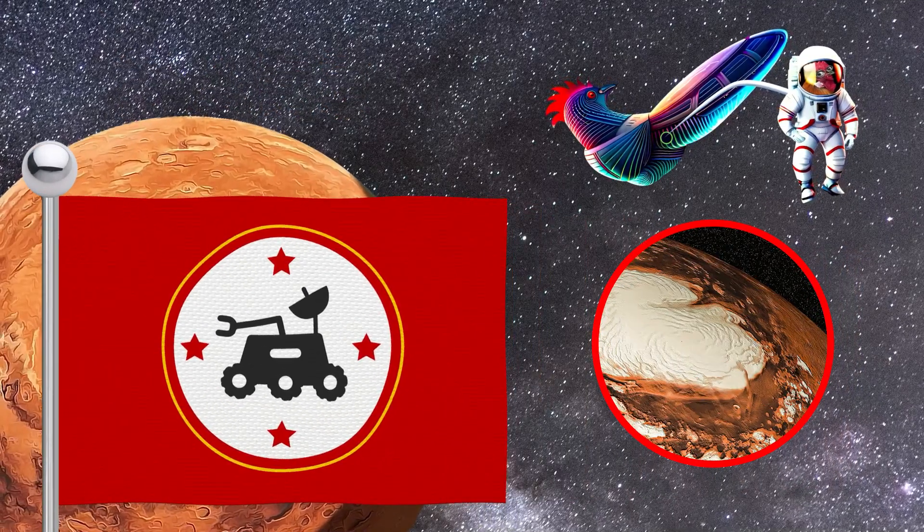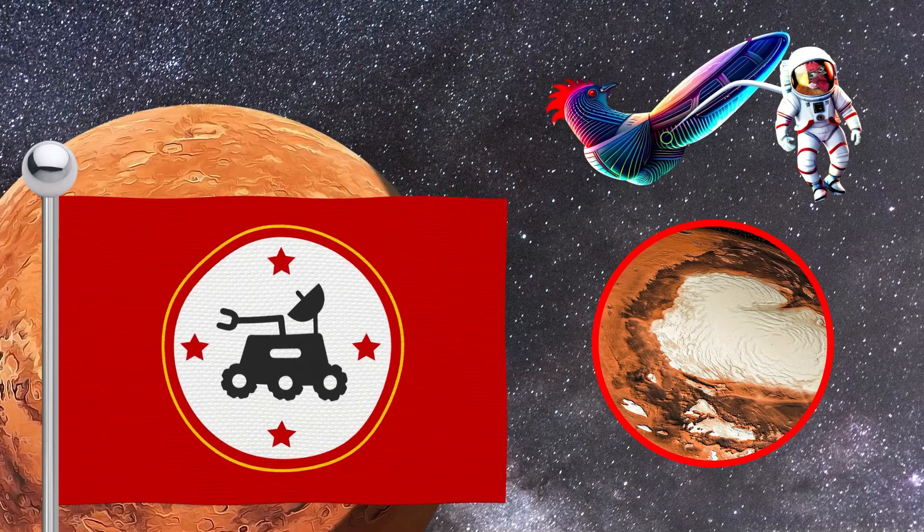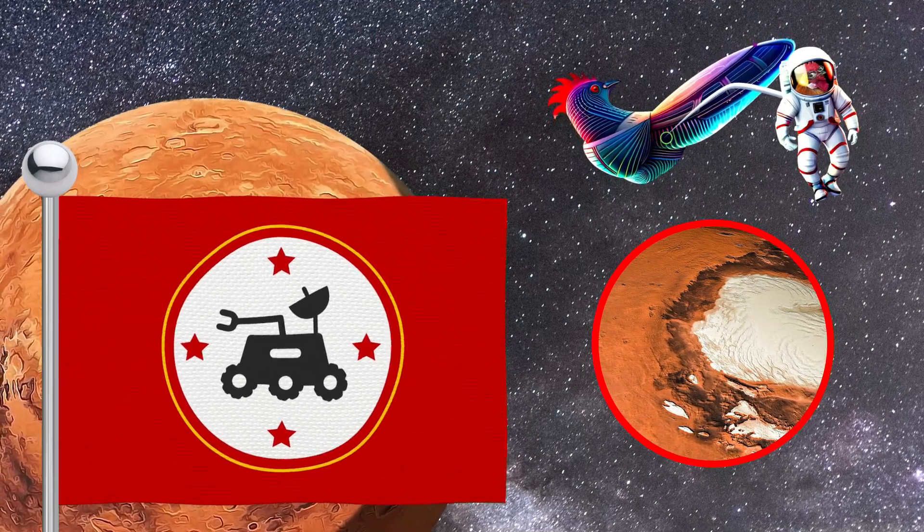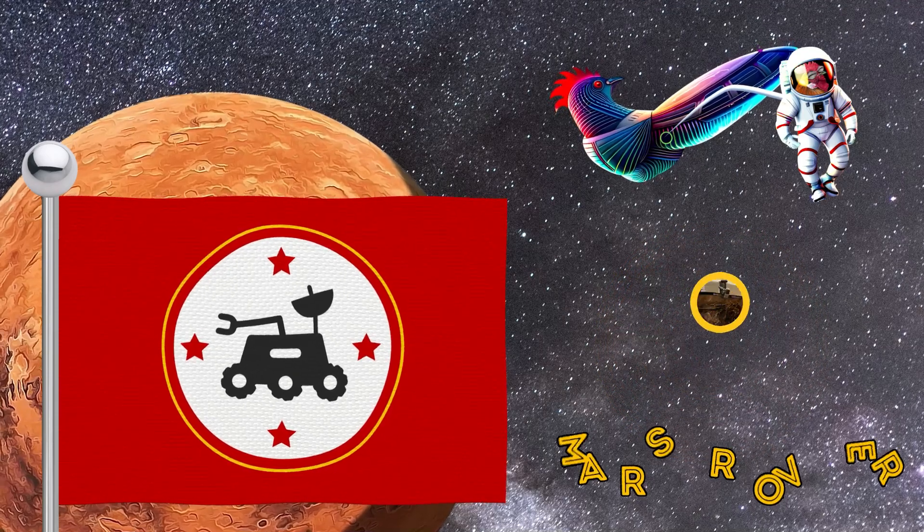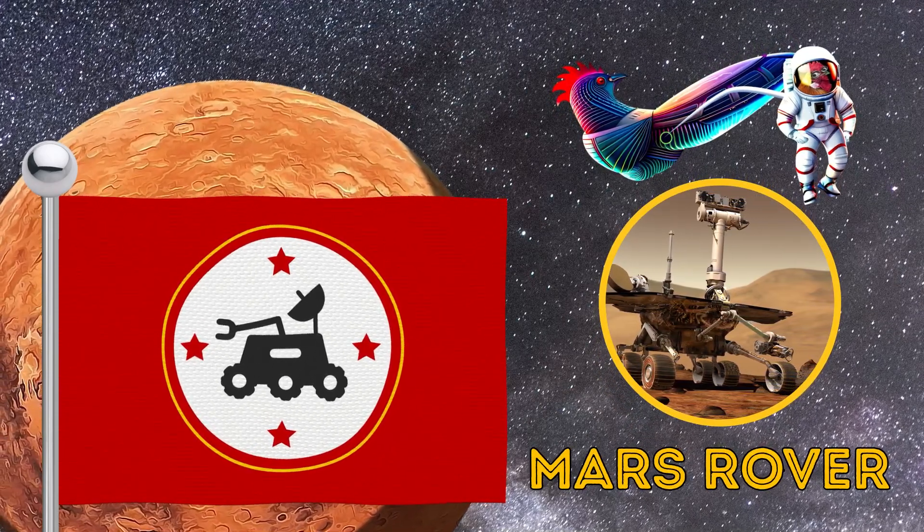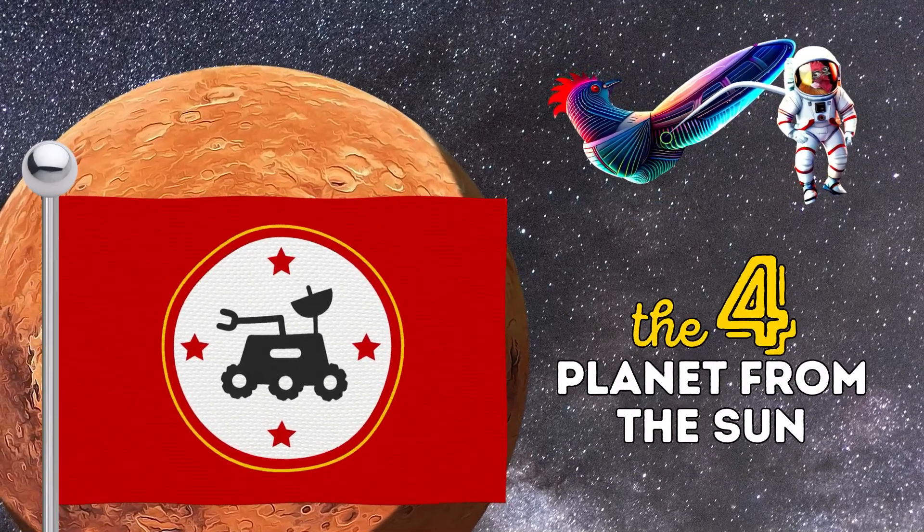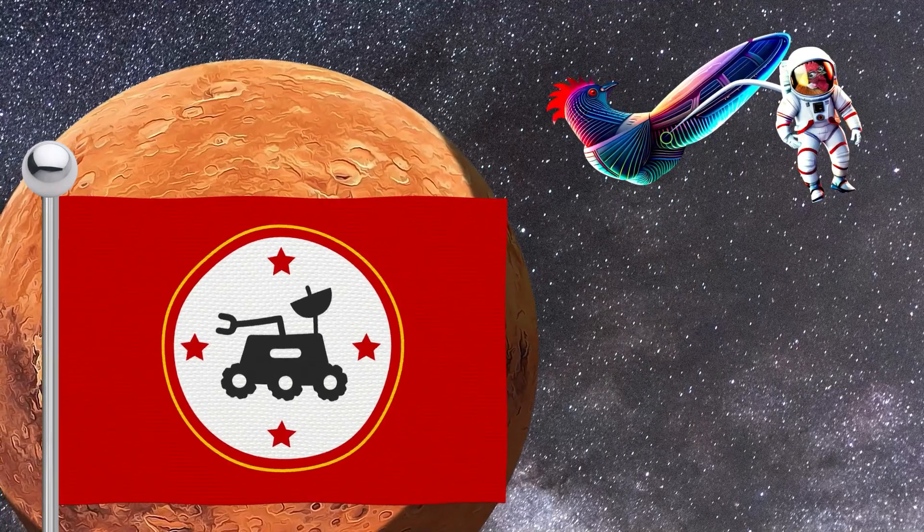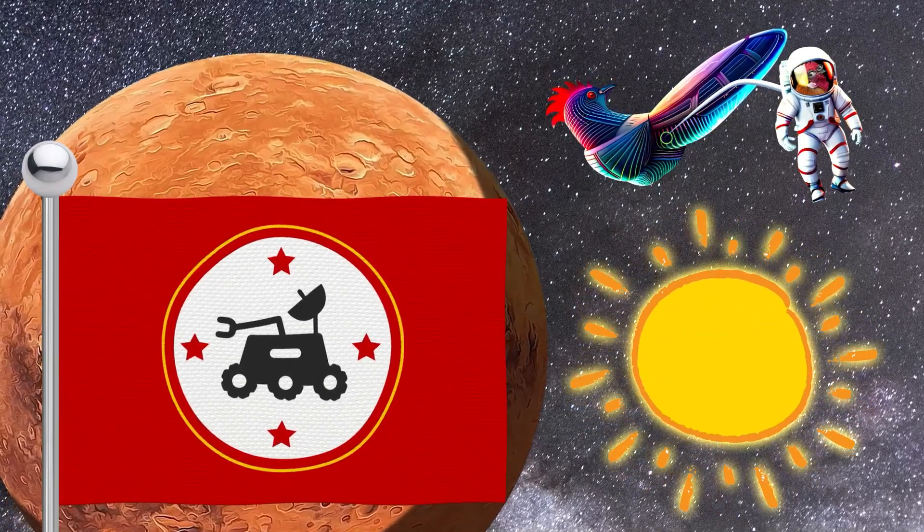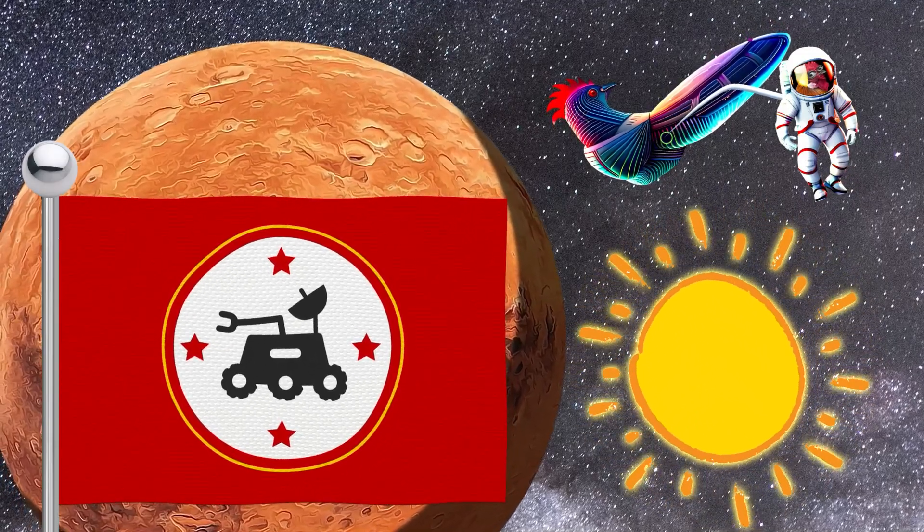The deep red background and the white circle represent the planet's distinctive reddish appearance and the planet's polar ice caps. The rover represents humanity's ongoing exploration of the planet. The four stars represent Mars' position as the fourth planet from the Sun. And the yellow line represents the Sun and its essential role in the Martian ecosystem.